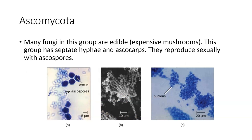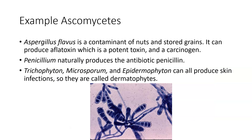Ascomycetes again has a lot going on. There are some really expensive mushrooms called morels (M-O-R-E-L) in this group — they're really unique looking. This group can be unicellular or multicellular and can reproduce sexually or asexually. Aspergillus flavus is usually a food contaminant — it's more often found in animal foods than human foods, so you will hear of dog foods being recalled because of Aspergillus poisoning. Aflatoxin is what pops up there.